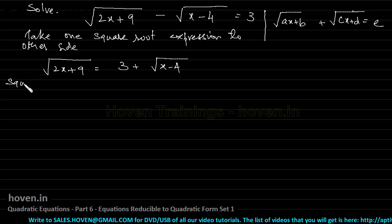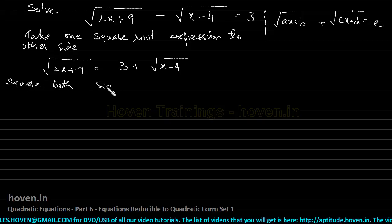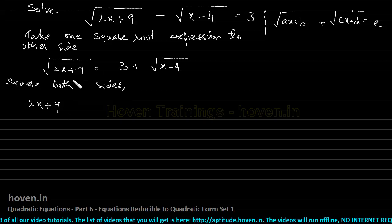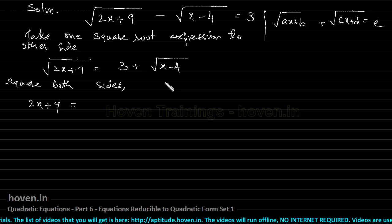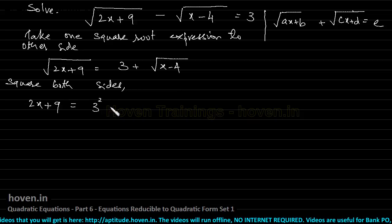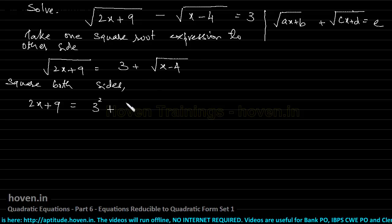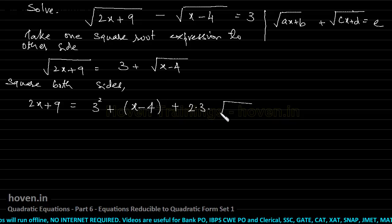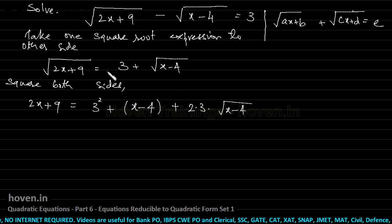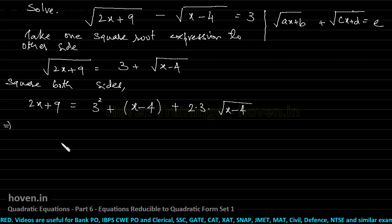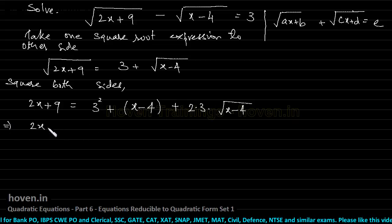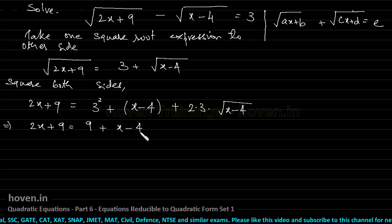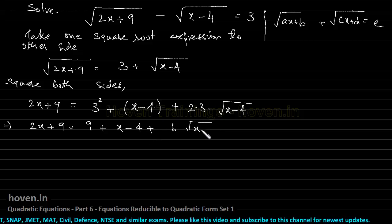Next, square both sides. You get: 2x + 9 = 3² + (x − 4) + 2×3×√(x − 4), because squaring (3 + √(x−4)) gives a² + b² + 2ab. So: 2x + 9 = 9 + (x − 4) + 6√(x − 4).